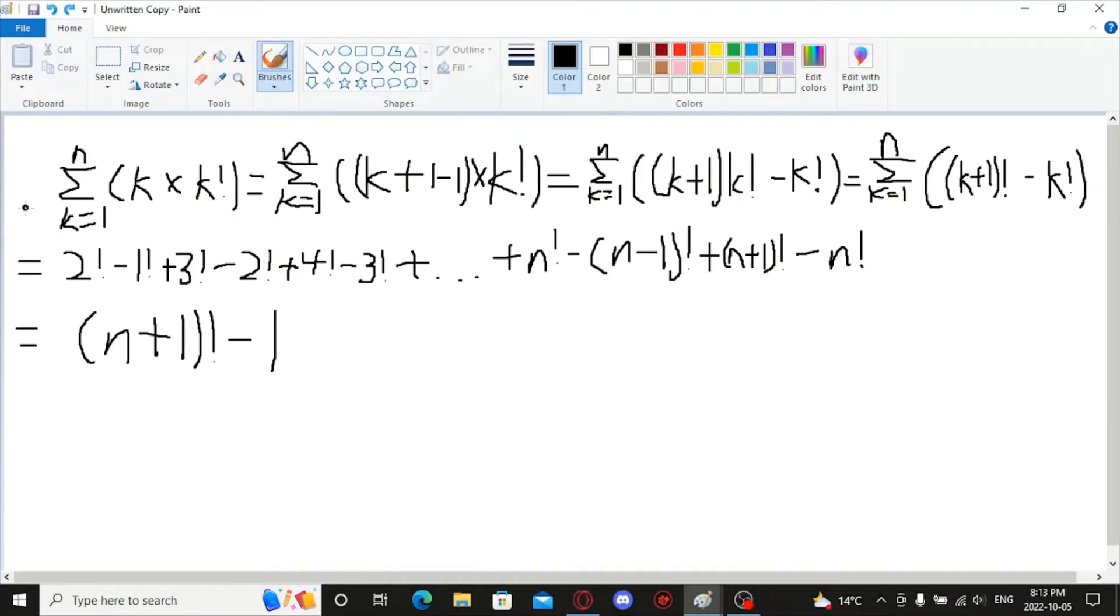This is the process for solving the equation. First of all, we have the left hand side of the original equation here. The series sum of k times k factorial. And here, we have changed this k into k plus 1 minus 1. And from this point, we use the distributive property in order to change this into k plus 1 times k factorial minus k factorial.